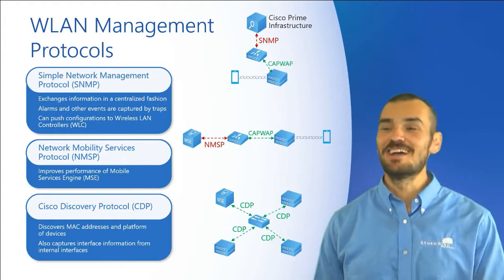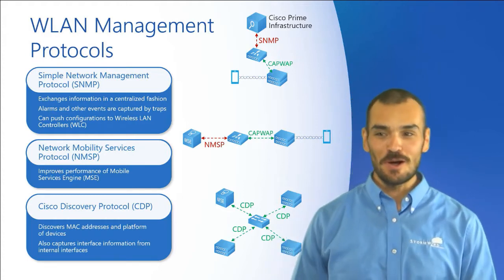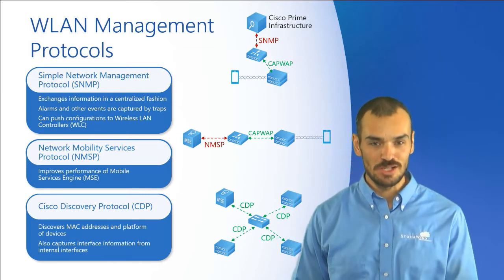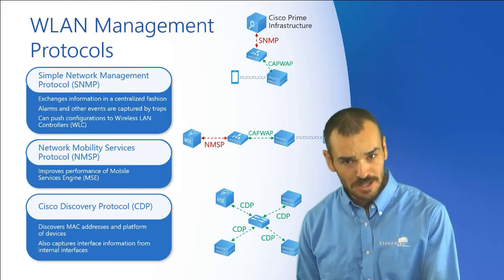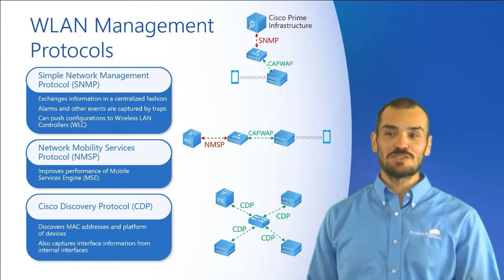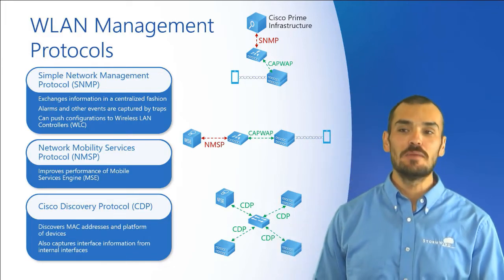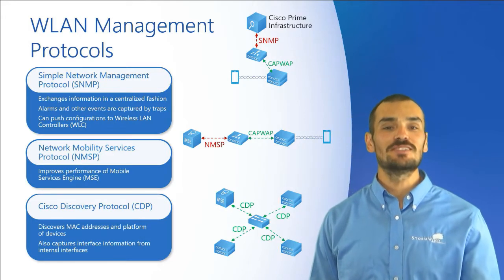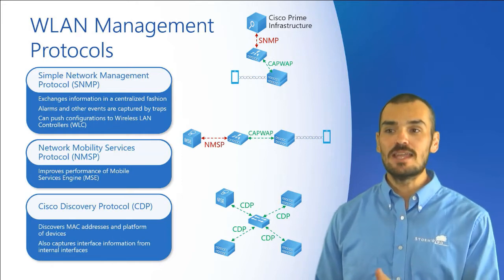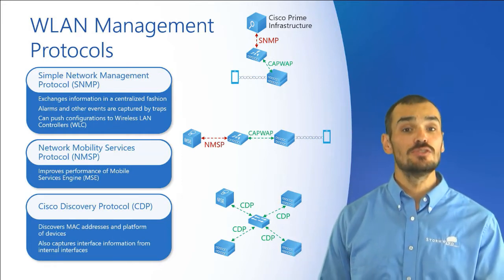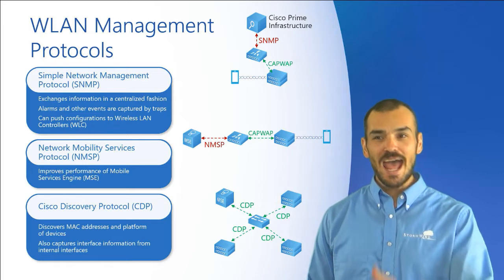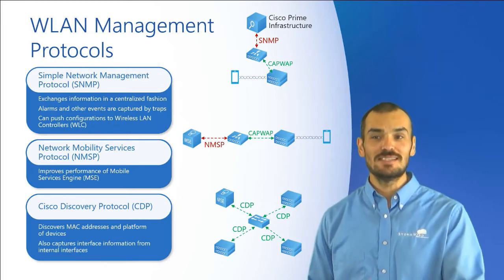NMSP is a Cisco proprietary protocol developed to overcome SNMP's limitations with real-time location data. SNMP is great at what it does, but like most things, it's not great at everything. NMSP improves communication speed and reliability between the controllers and something known as Cisco's Mobility Services Engine, or MSE. The MSE enables controllers to provide location-based services to wireless devices.